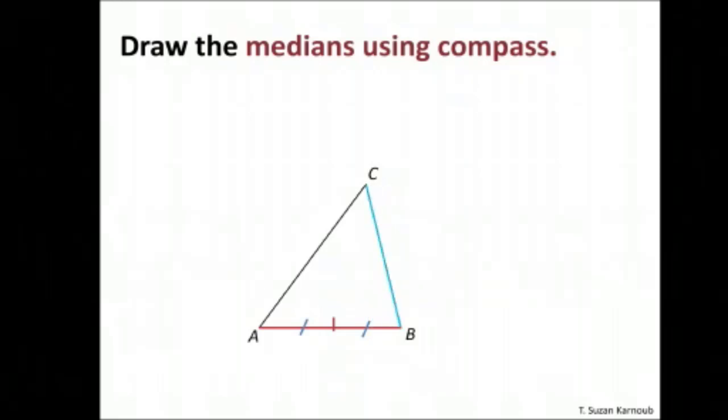I repeat this method for side BC. Using the compass, I mark arcs from B and C to find the midpoint. I use the same method for side AC. After finding all midpoints, I connect each vertex with its opposite midpoint. The intersection point is the center of gravity of the triangle.